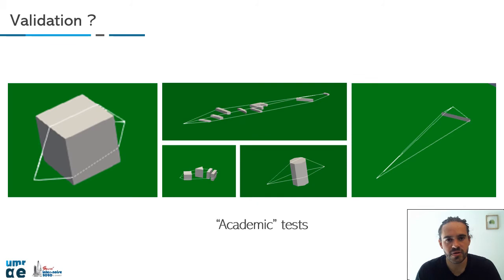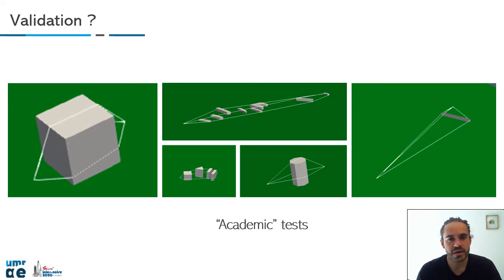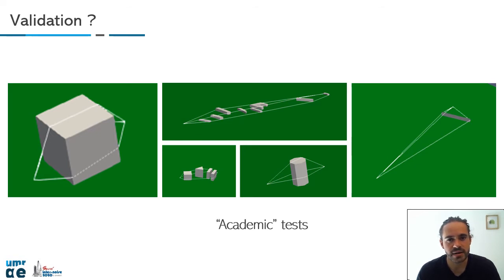To validate the model, we have some academic tests. All the tests can be found in the source code as unit tests. It means that if someone does a development into noise modeling, these tests have to pass if you want to share with the community. We have nearly 20 tests about the emission part and the propagation part, to be sure that the paths are well-found and the attenuation over the path is the one expected by the Directive 2015.